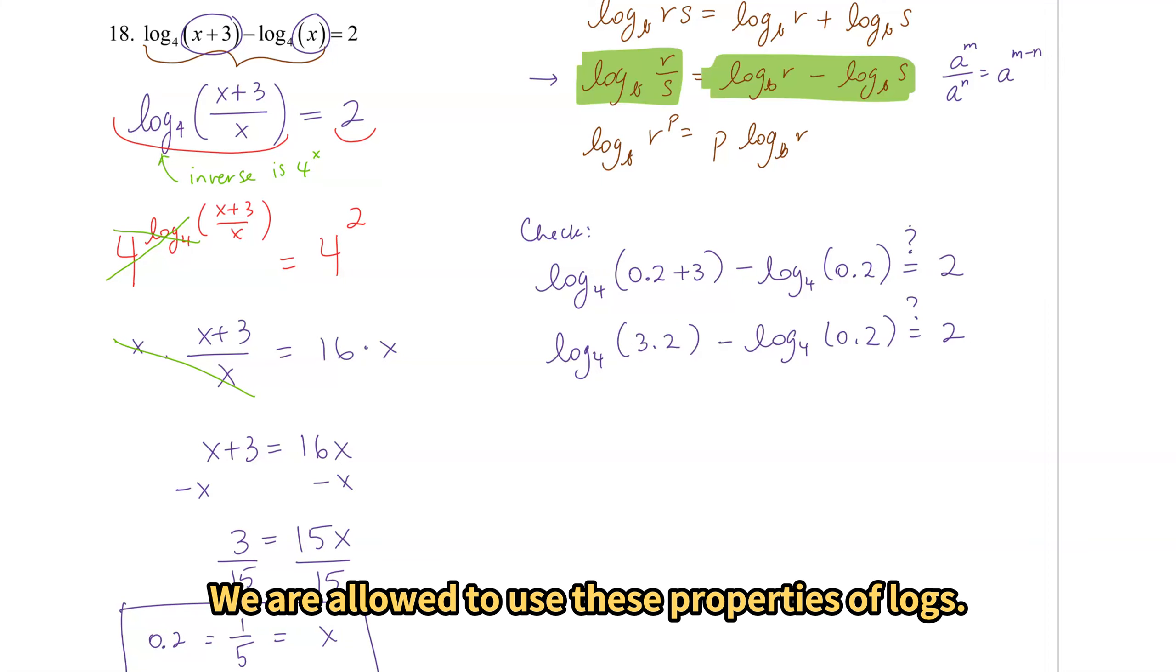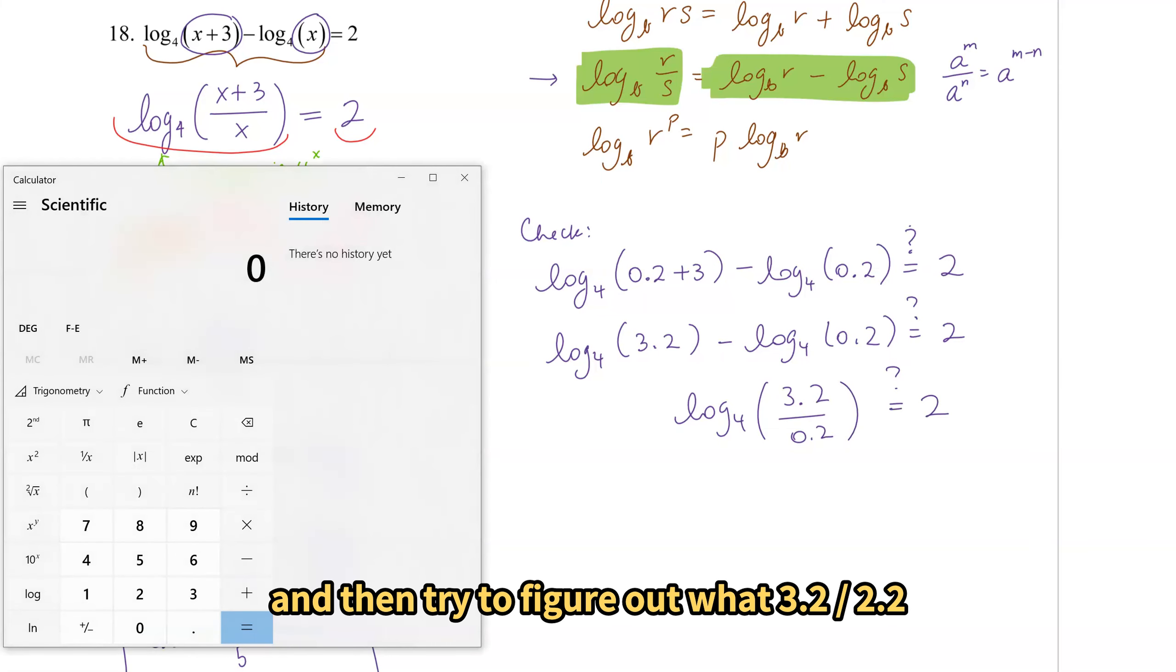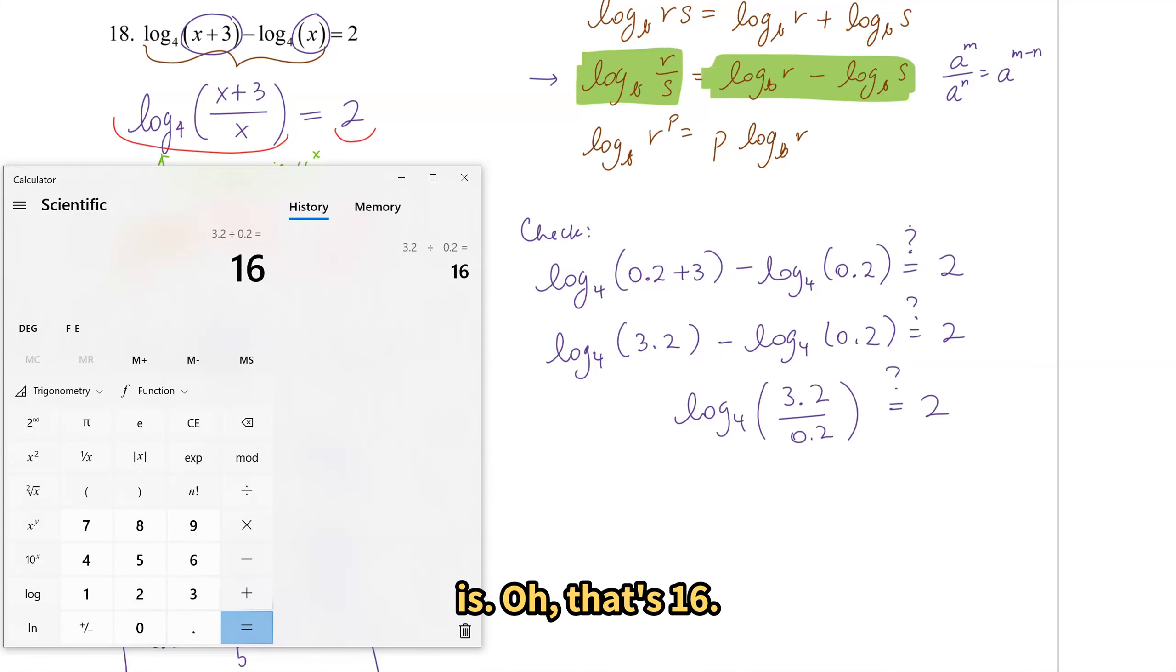But we are allowed to use these properties of logs. So I'm going to combine this. Log base 4, 3.2 divided by 0.2. And then try to figure out what 3.2 divided by 0.2 is. Oh, that's 16.